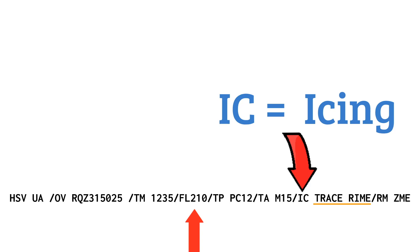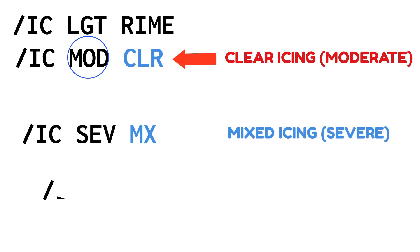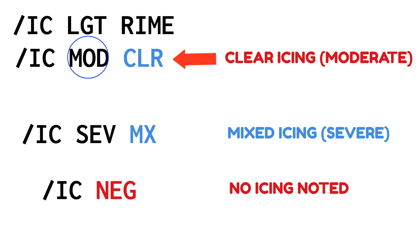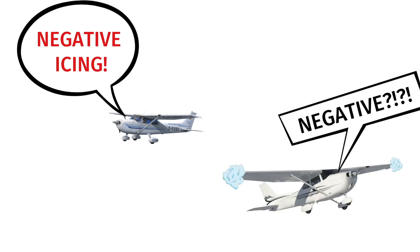There are a few additional contractions you might see with icing reports. Clear icing can be particularly scary, especially if it's moderate or severe. You may also see a mix of rime and clear icing, or NEG for negative if the pilot didn't notice any icing. Be careful with negative reports — if the forecast calls for icing and one pilot doesn't notice it, that doesn't mean it doesn't exist. He may have gone through a hole in the clouds while conditions elsewhere are severe.